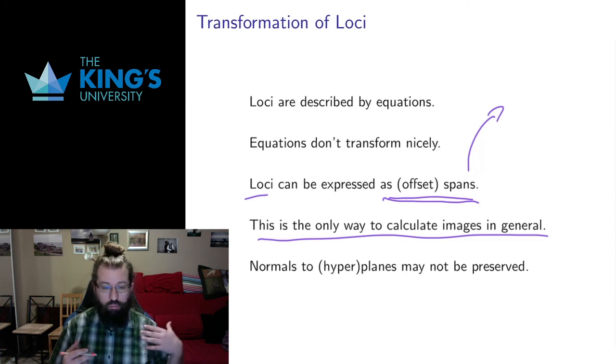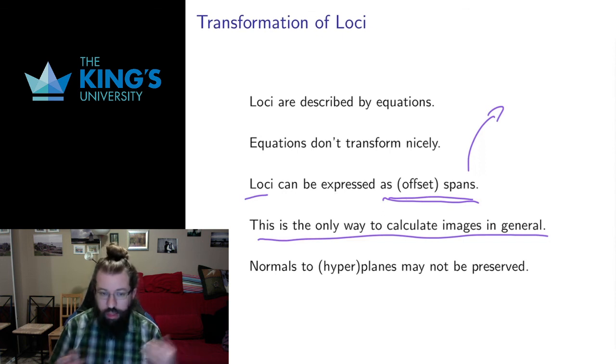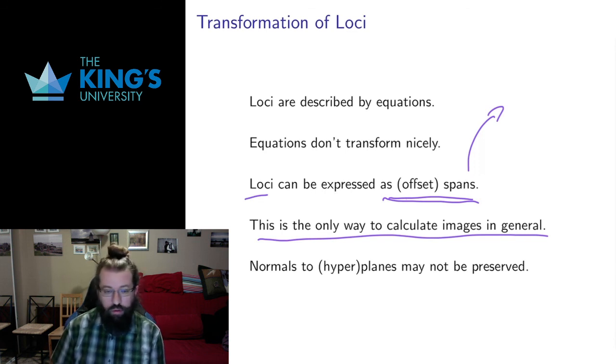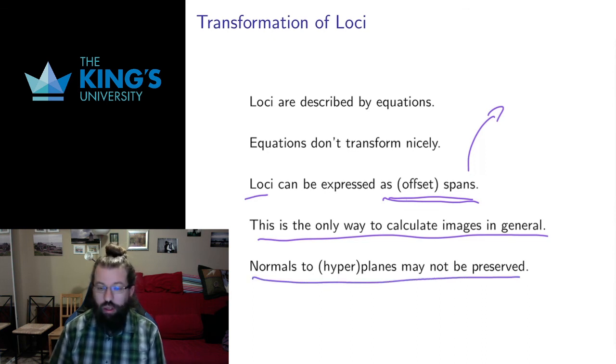You might think, well, planes and hyperplanes are defined by normals. Normals of vector, can't we just figure out what the normal goes to? Won't that be the new normal? Unfortunately, that won't be. Normals of planes and hyperplanes may not be preserved under transformations, because the fact that something sits orthogonal may change. The transformation may move things, change angles, and things that start out as orthogonal may not end up as orthogonal. So as much as it is tempted to try and transform the equations, or transform the normals, none of that works in general. The only way we can transform loci via matrices is actually to go back to expressing them as spans or offset spans.